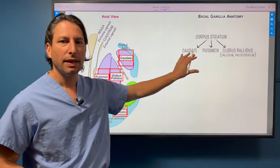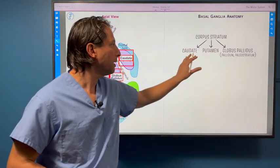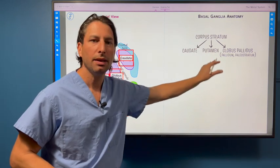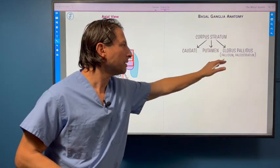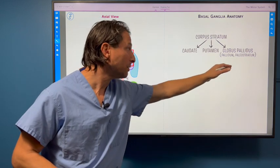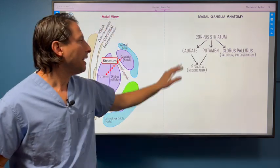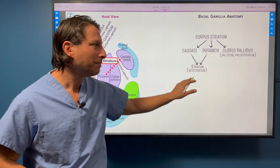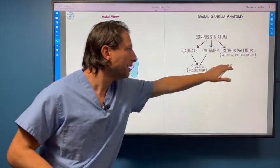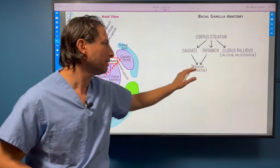Nomenclature of the basal ganglia is its own challenge. The corpus striatum comprises the caudate, putamen, and globus pallidus. The globus pallidus is also referred to as just the pallidum or the paleostriatum. And then the caudate and putamen together are called the striatum or sometimes the neostriatum in contrast to the paleostriatum.